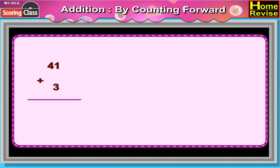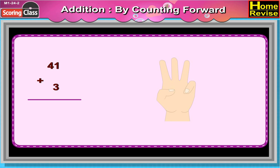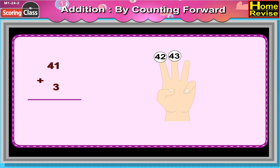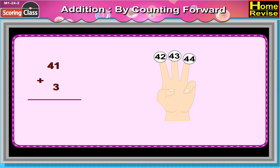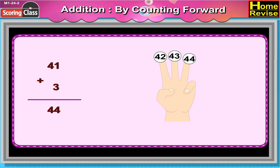How about 41 plus 3? 41 plus 3 would be 42, 43, 44. So 41 plus 3 is 44.